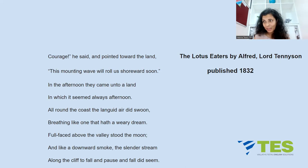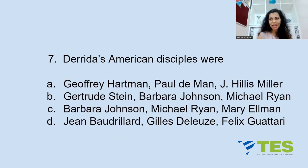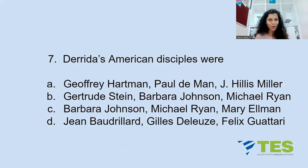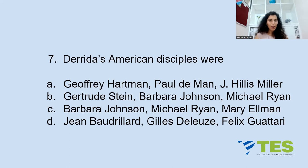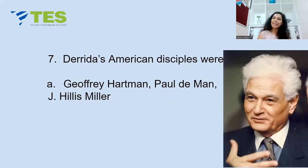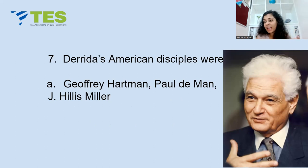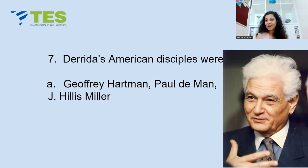Question 7: Derrida's American disciples were — A: Geoffrey Hartman, Paul de Man, and J. Hillis Miller; B: Gertrude Stein, Barbara Johnson, Michael Ryan; C: Barbara Johnson, Michael Ryan, Mary Ellmann; or D: Jean Baudrillard, Gilles Deleuze, Félix Guattari. The answer is Option A. Hartman, de Man, and Miller, along with Derrida, were all part of the Yale School and advocated deconstruction as a means of analyzing text.